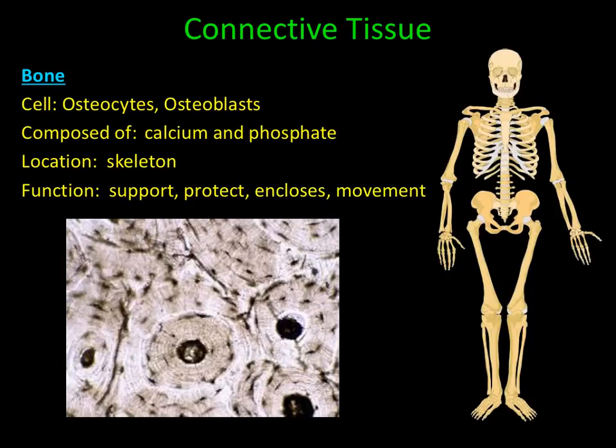The next type of connective tissue is the hardest connective tissue: bone. Bone is very rigid and sturdy, made by osteoblasts and maintained by osteocytes. It is composed of two different types of minerals, calcium and phosphate. Bone makes up the skeleton of the skeletal system and provides functions such as support and protection. Bone will be discussed in more detail in future lectures.